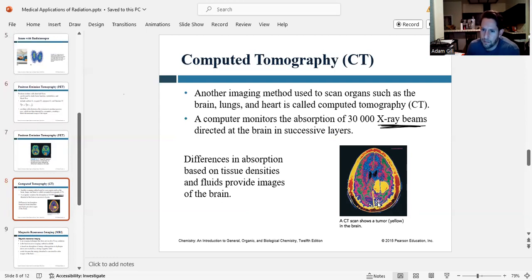So here's a scan of somebody's head and brain. And you can see these color variations are based on tissue densities. And you can see this bright yellow spot here in the middle, that's a tumor. And so the brain tumor has a different tissue density than the healthy brain tissue.